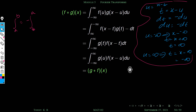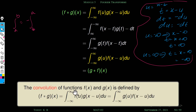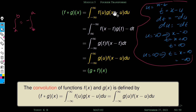Now we are ready to define convolution. The convolution of functions f(x) and g(x), denoted f star g of x, is defined by integral from minus infinity to plus infinity of f(u) g(x minus u) du, or equivalently integral from minus infinity to plus infinity of g(u) f(x minus u) du — both formulas are the same.